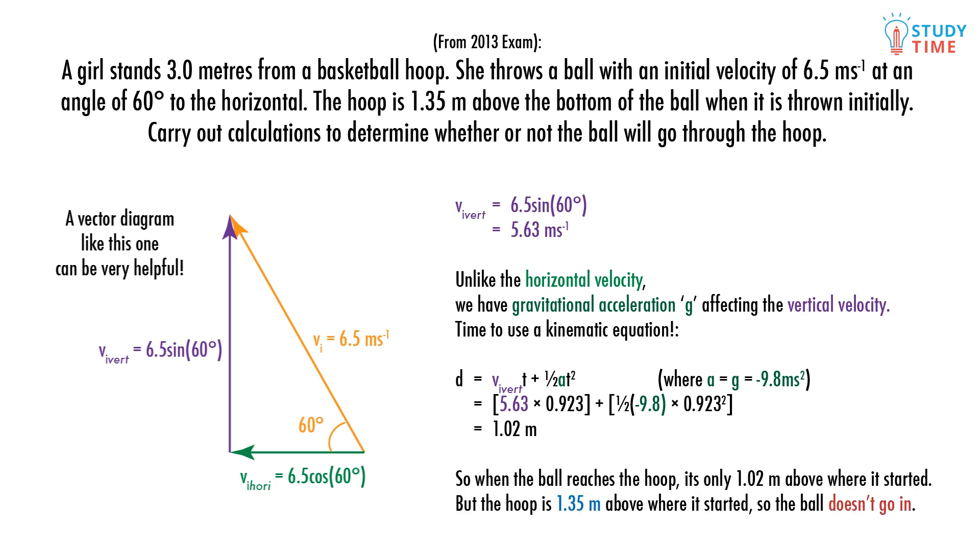Remember this is the distance above the height that the ball was released at. The hoop was 1.35 meters above this height so when the ball horizontally reaches the hoop it's too low to go in. Therefore the ball will not go through the hoop.